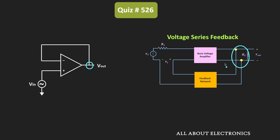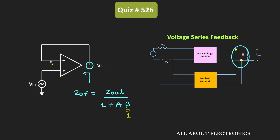On the output side, since we have a shunt connection, the overall output impedance will reduce. If the output impedance of this feedback circuit is Zof, then it can be given as Zout divided by (1 + Aβ), where Zout is the output impedance of the non-ideal op-amp. In this case, the value of beta is equal to 1, because the entire output voltage is given as feedback to the input side.